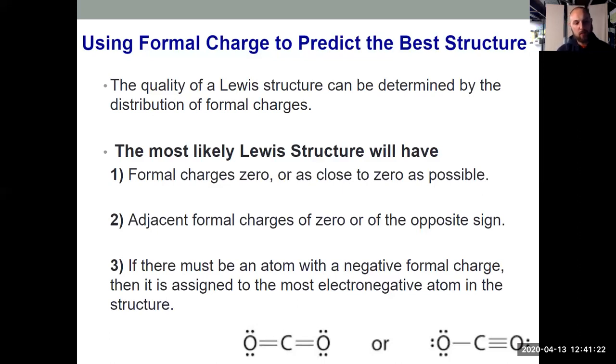But how do I know the Lewis structure on the left is the proper one? If you go through and calculate the formal charge of everything in the Lewis structure on the left, both the oxygens and the carbon have formal charges of zero. It's the best possible structure.